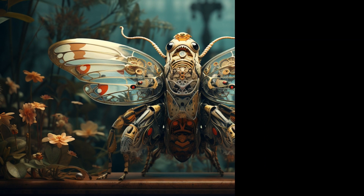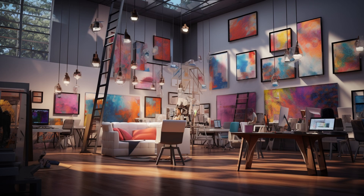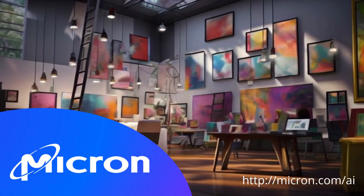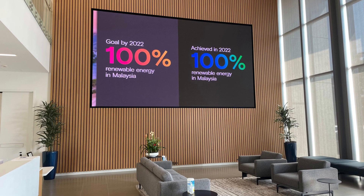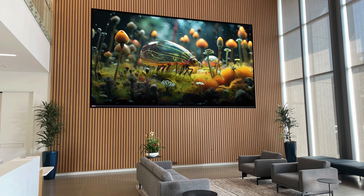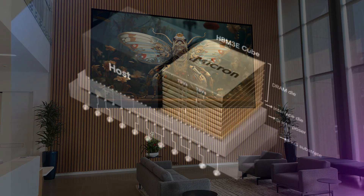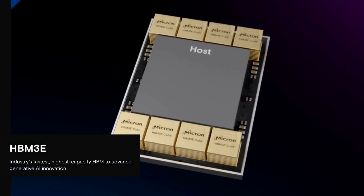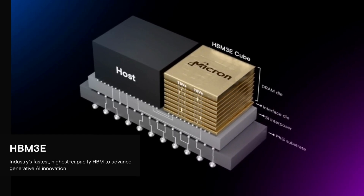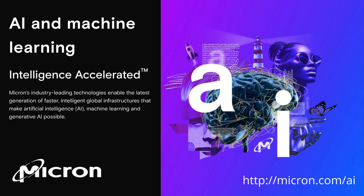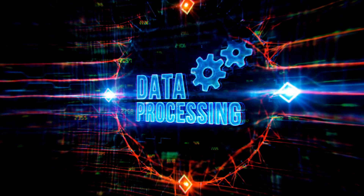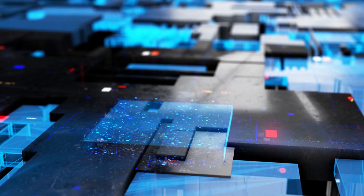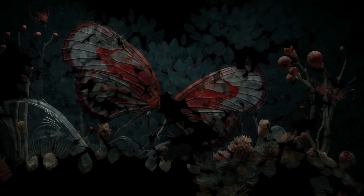Our AI studio is stocked with some incredible technology. A big thanks to Micron Technology for sponsoring this video. They have commissioned some AI art from me for one of their facilities. Micron makes high-performance memory and storage solutions like HBM3E that enable the fast processing needed for AI applications. Their technology plays a key role in accelerating data processing, training AI models, and enhancing the overall efficiency and capacity of AI systems. Let's take a peek into the AI art studio and find out how Micron helps us create all these amazing AI images.